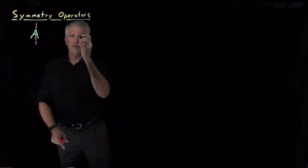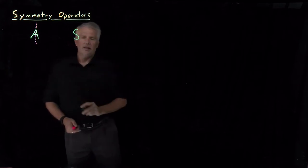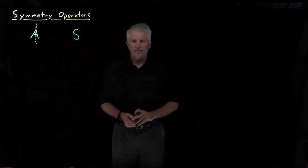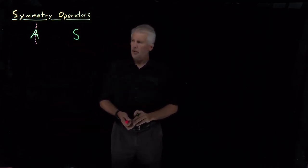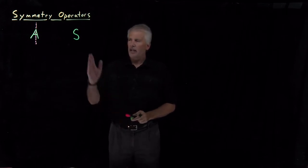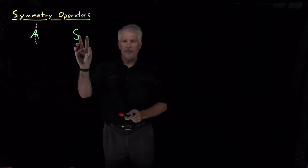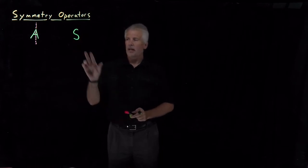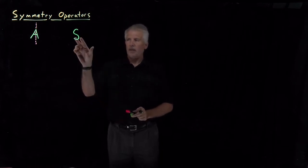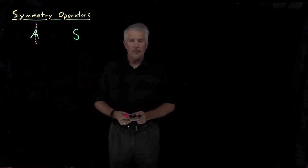Now if I draw a capital letter S and ask you: is that letter symmetric? You'd say yeah, it still has some symmetry, but it no longer has left-right symmetry. If I cut the letter in half and flip it in a mirror, it's not going to look the same — a backwards S doesn't look the same as a forwards S.